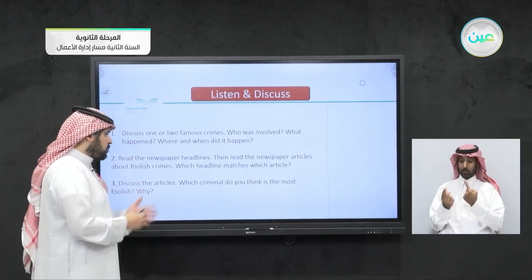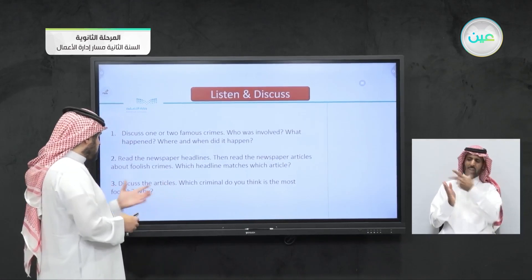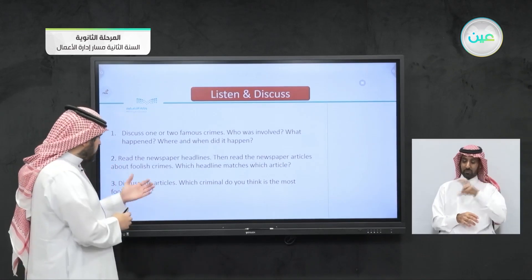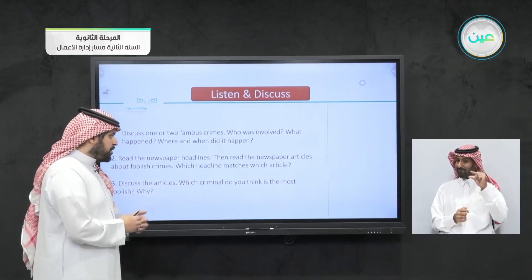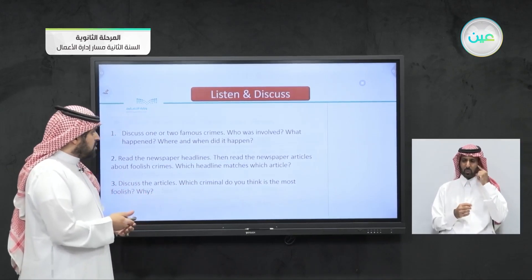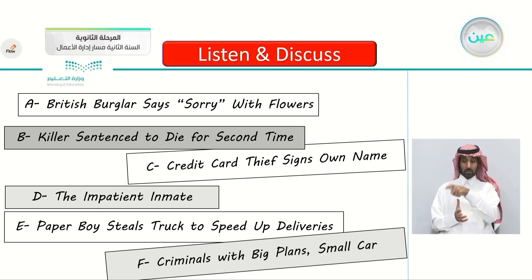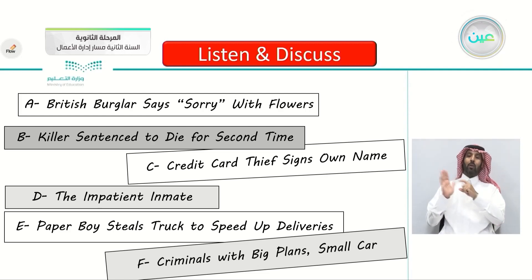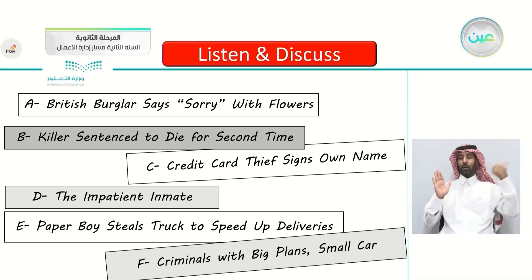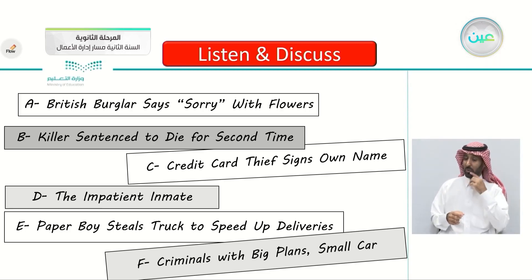Number three: discuss the articles. Which criminal do you think is the most foolish? After reading, I will be asking you this question again. So, these are the headlines — we have A, B, C, D, E, and F. Six headlines total. Headline A: British burglar says sorry with flowers.